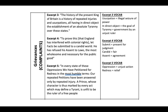The grievances are our list of complaints — the body paragraphs. These are the three major complaints the colonists had against King George and England. Excerpt three states the history of the present King of Britain is a history of repeated injuries and usurpations — illegally seizing power — having as a direct object the establishment of an absolute tyranny over these states. The first complaint: the colonists feel King George's rule is unfair and that the taxes placed on them without representation in Parliament are illegal.